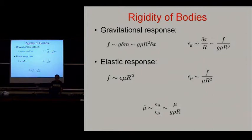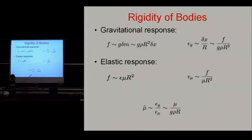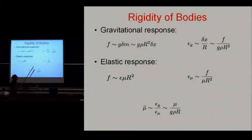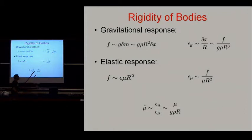Now I want to talk about the rigidity of bodies — how rigid bodies are. I'm asking: what happens if I have a stretching force that I apply to a body with self-gravity g, mean density ρ, and radius r? How much does this stretch, and how does that compare with the radius of the body? What is the strain?